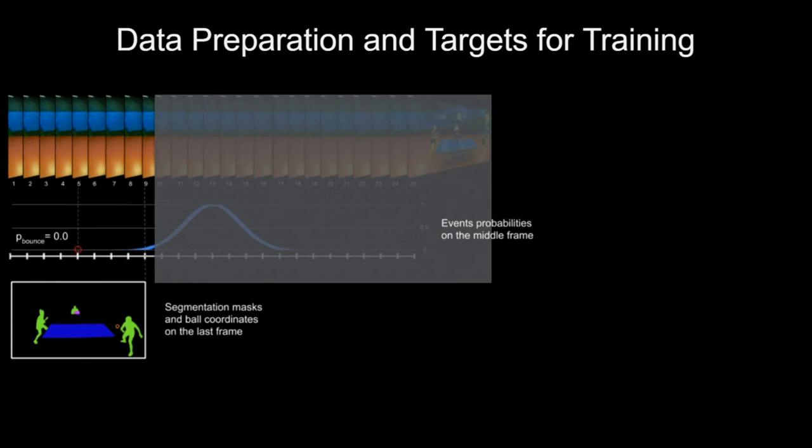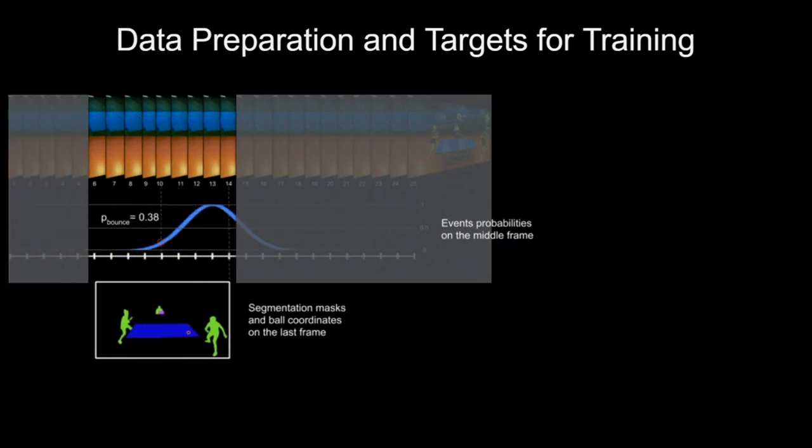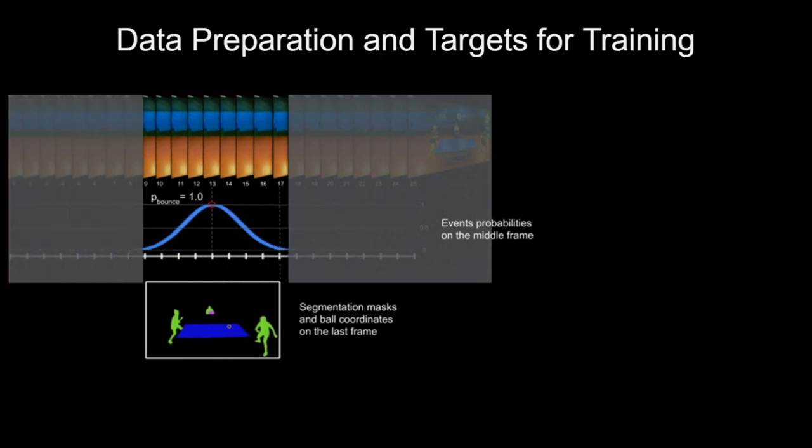It may be impossible to pick the particular frame with the event of interest due to high ball speed. That is why event targets were smeared with the sine function.